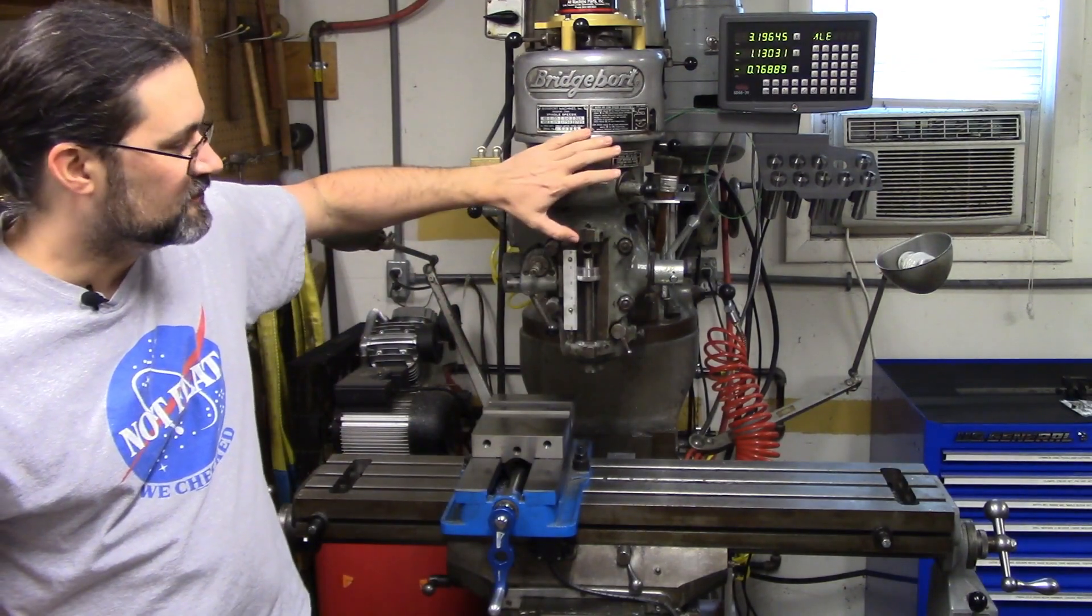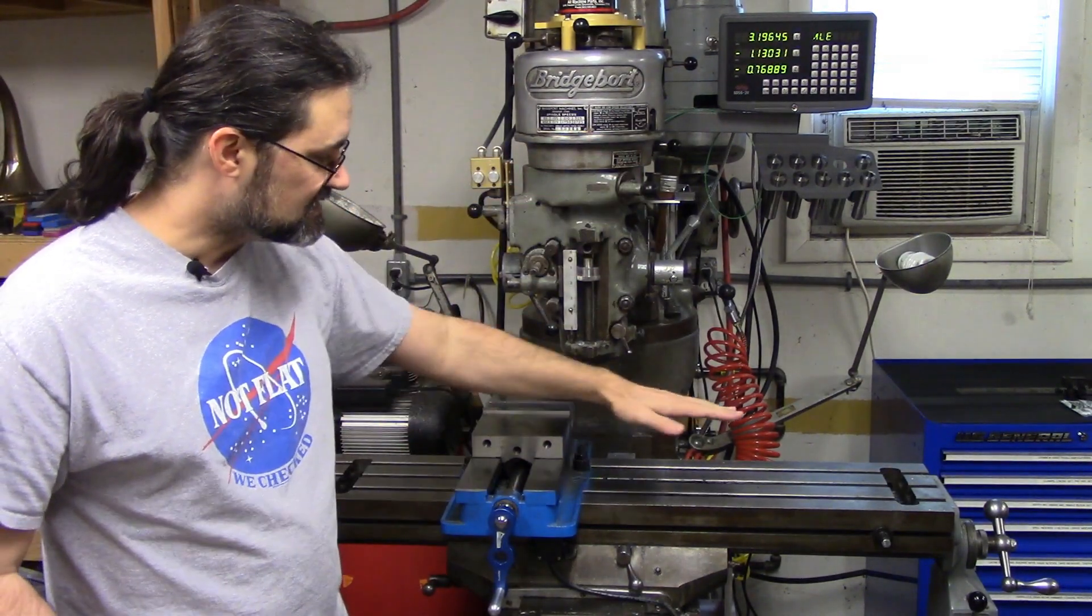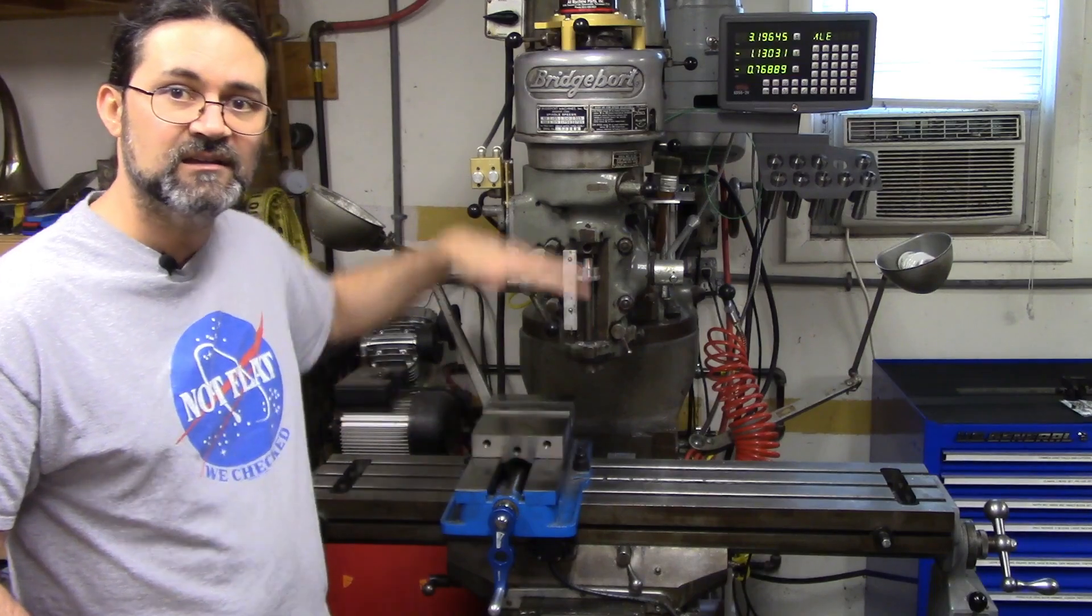If you look at the milling machine for instance, you have three axes of motion: side to side, front to back, and up and down.